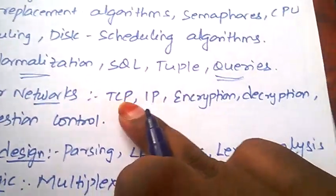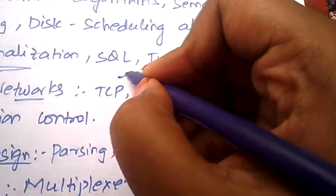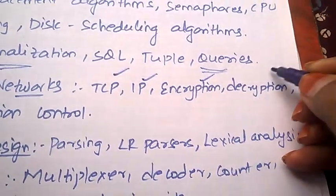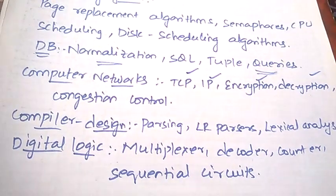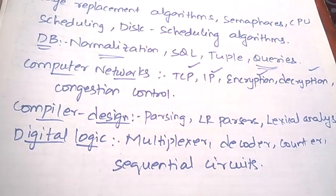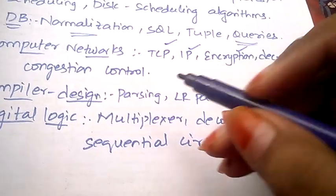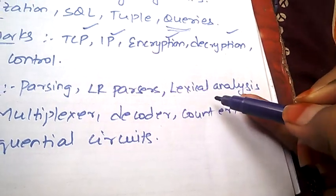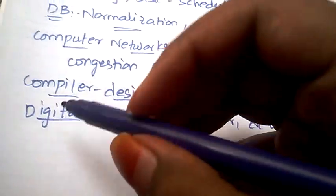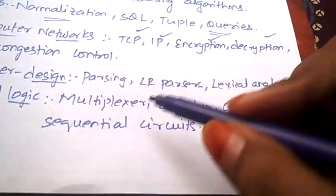Coming to Computer Networks, they'll be asking on TCP, IP, encryption, decryption, and congestion control. These are the few important topics for Computer Networks. Coming to Compiler Design: parsing, LR parsers, lexical analysis. Coming to Digital Logic, the...